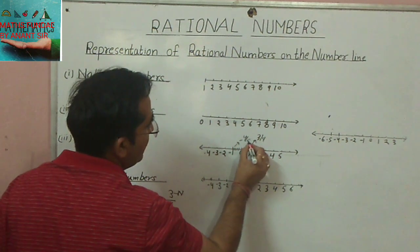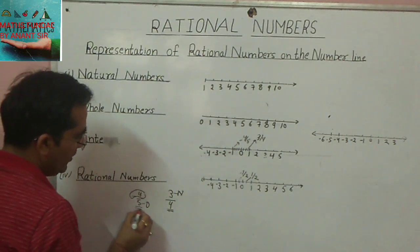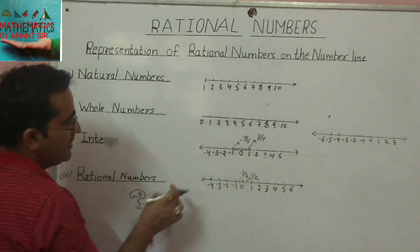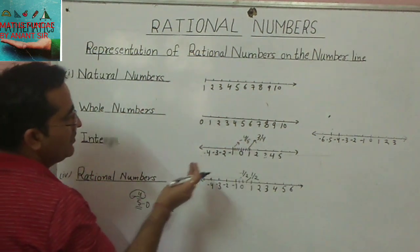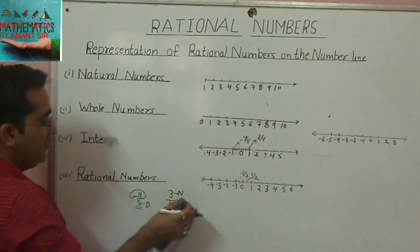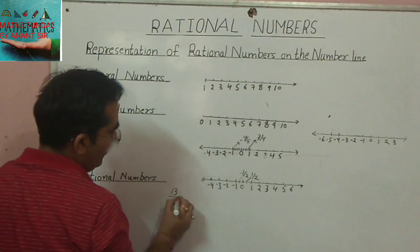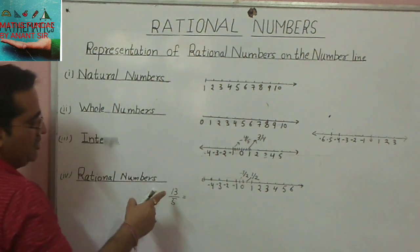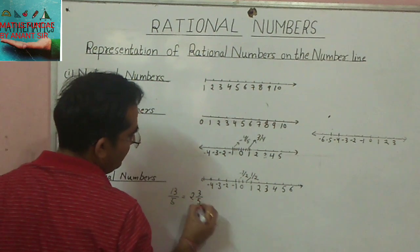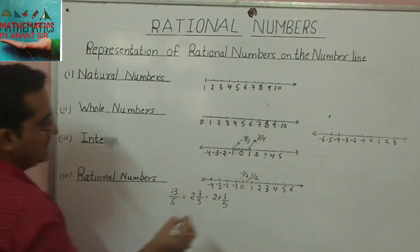If the numerator is greater than the denominator, we have an improper fraction. For example, 13 upon 5. We first convert it to mixed form: 13 upon 5 equals 2 whole 3 upon 5, which can be written as 2 plus 3 upon 5.